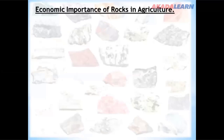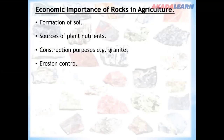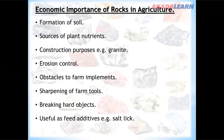Economic importance of rocks in agriculture: rocks can be used in formation of soil; rocks can serve as sources of plant nutrients; rocks can be used for construction purposes; rocks can be used for erosion control; rocks can serve as obstacles to farm implements; rocks can be used for shaping of farm tools; rocks can be used for breaking hard objects — for example, a farmer dealing with palm kernels can use stones to break them. Rocks are also useful as feed additives, such as salt licks.